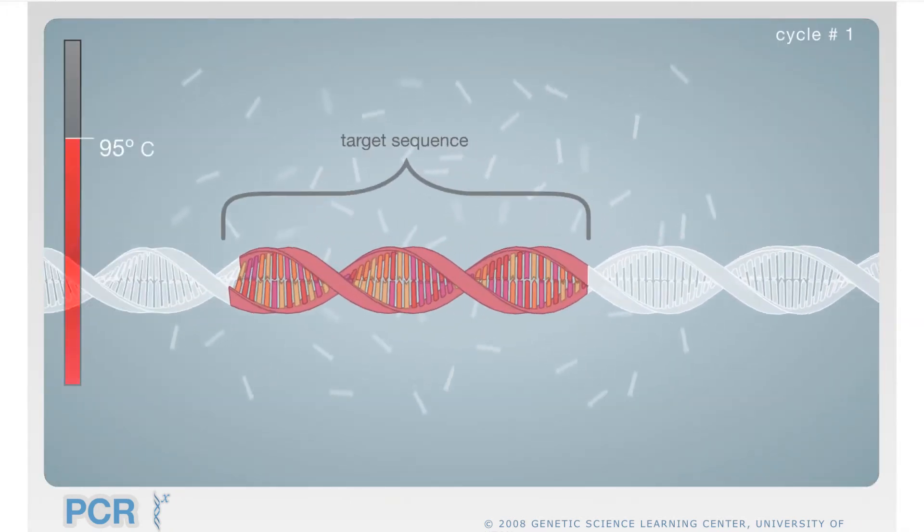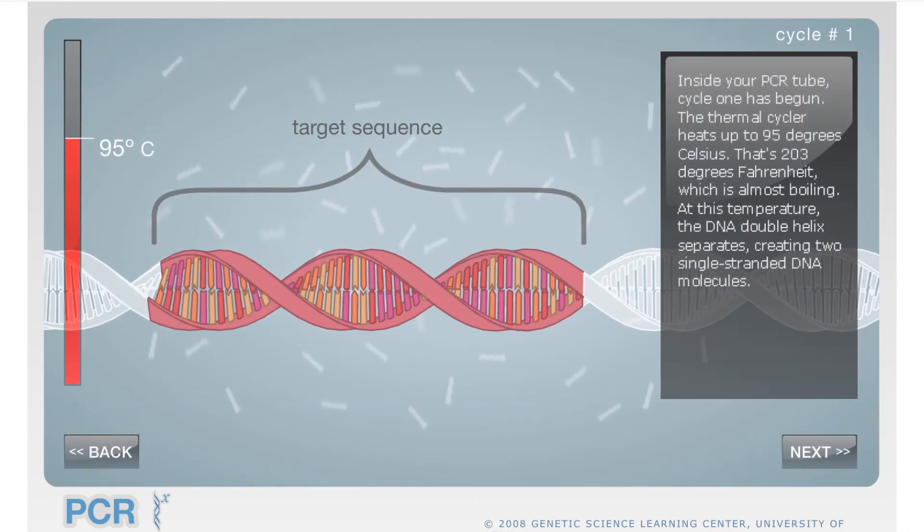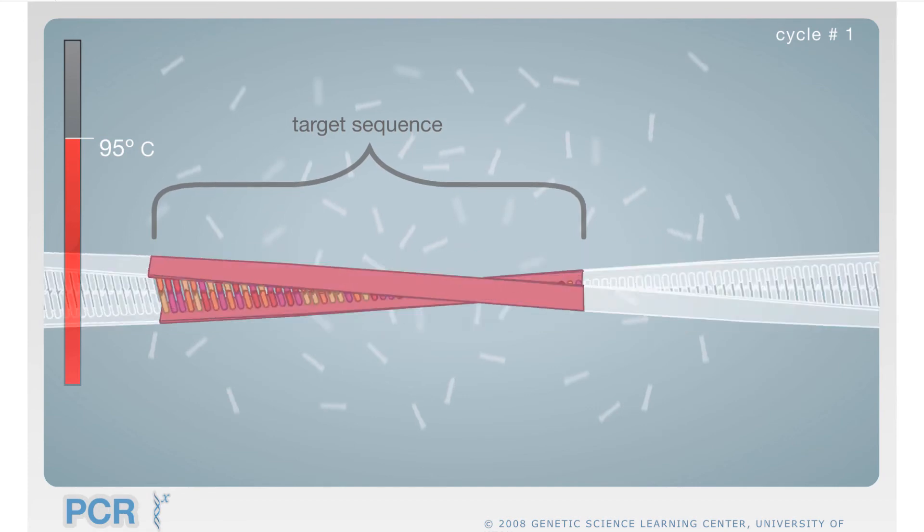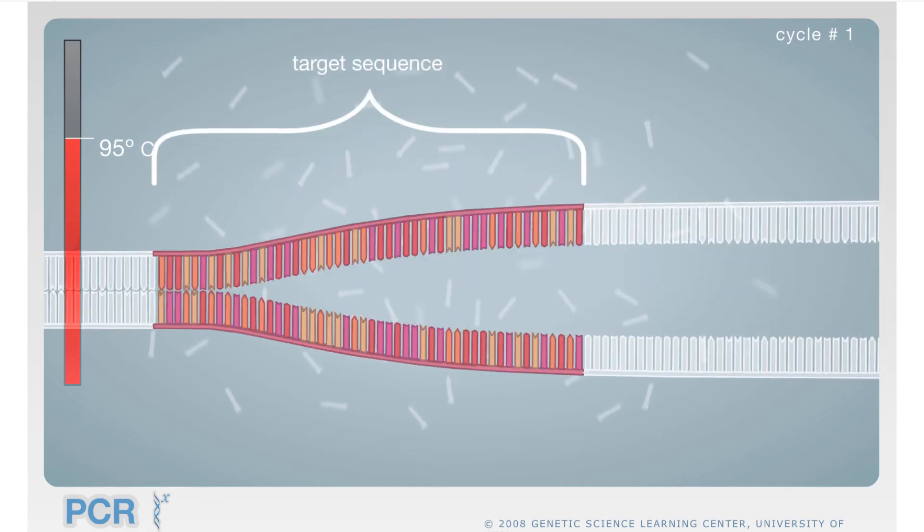We start by heating up the DNA in the tube to 95 degrees Celsius to separate the two strands. We must do this because we cannot add nucleotides if both strands are tightly coiled around each other.